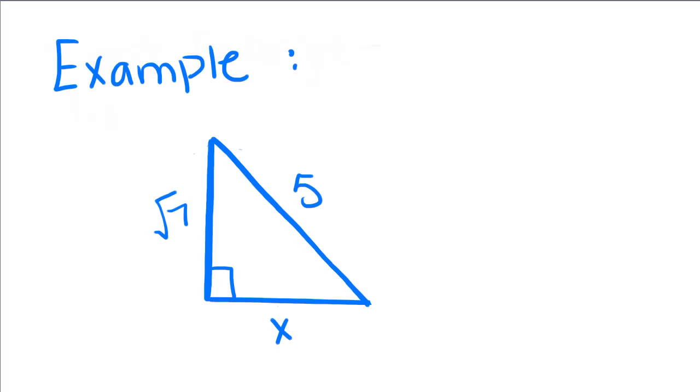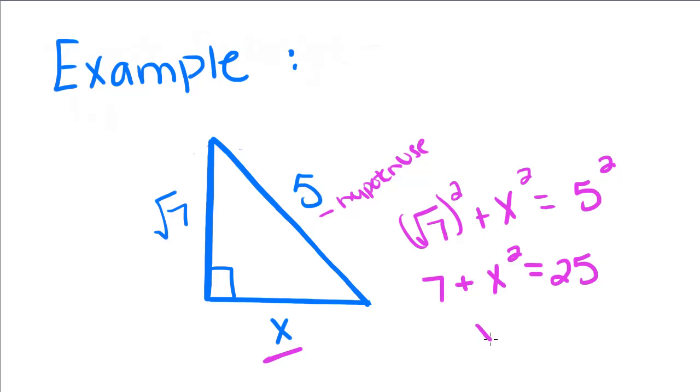And for one last example, this is our hypotenuse and we're trying to find out what x equals. So we're going to take each one of the parts and square them and set it equal to 5 squared. So if you take the square root of 7 and you square it, you're undoing this square root. So this just becomes 7 plus x squared equals 25. x squared is equal to 18. If you take the square root of that, you get x is equal to the square root of 18.